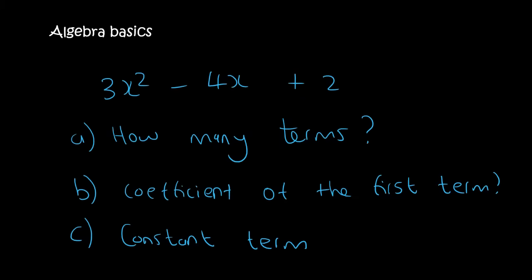Alright, so maybe if you want to pause this video and then you can try this one. So here we're saying how many terms. Well, that's 1, 2, 3, so that will be 3 terms. Then they're saying the coefficient of the first term. So we look at the first term, and remember the coefficient is the number in the front. And so that will be a 3. And then constant term.